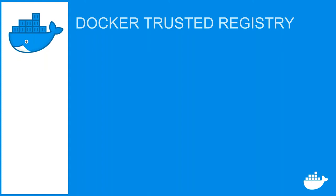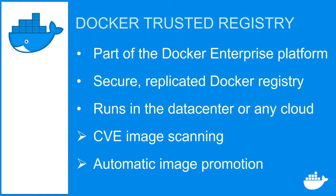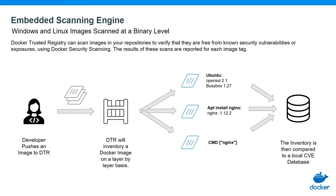Docker Trusted Registry is the registry part - the server you run on-premise or in your cloud which stores your Docker images privately. It's part of Docker Enterprise. It's a replicatable registry, so you could run multiple mirrors and have all your images shared if you've got geographically distinct locations. And because it runs in containers itself, you can run it in the data center or any cloud. What I'm going to focus on is image scanning - looking inside your application image to tell you about any known vulnerabilities - and automatic image promotion, automating the pipeline from dev, QA, test, and production to make sure what you're about to run in production passes all your quality gates.